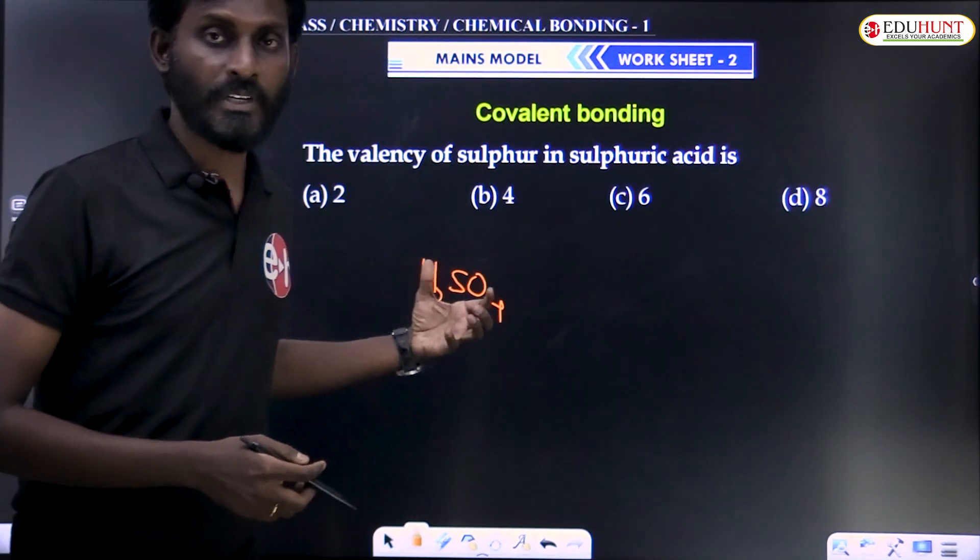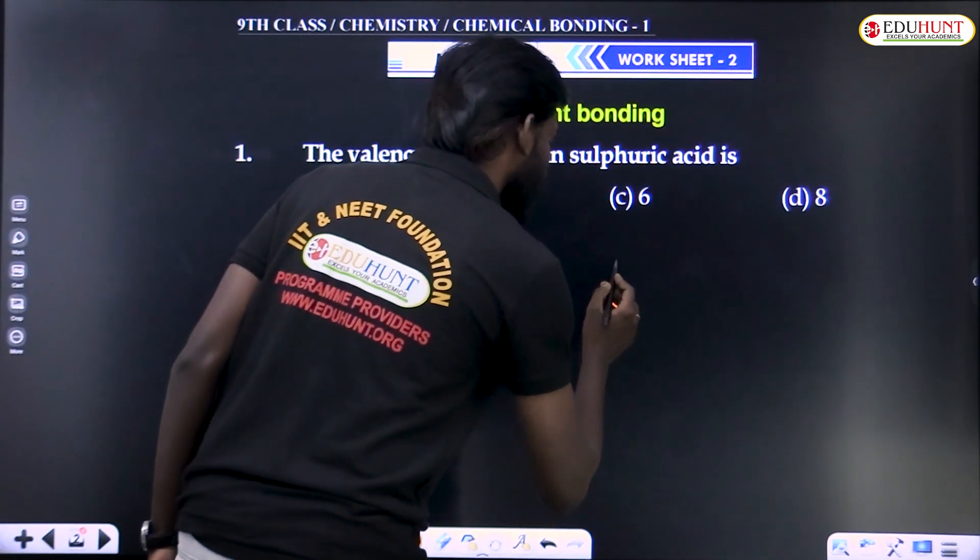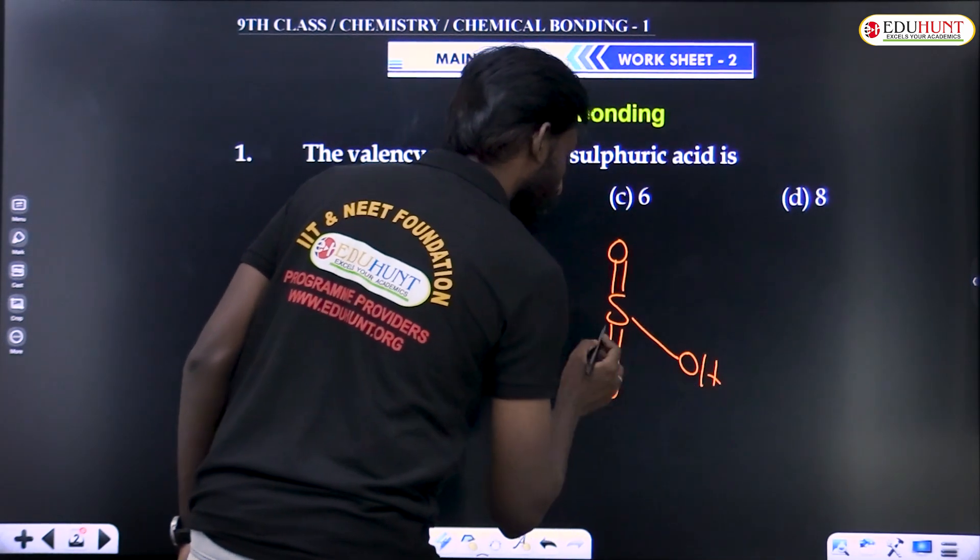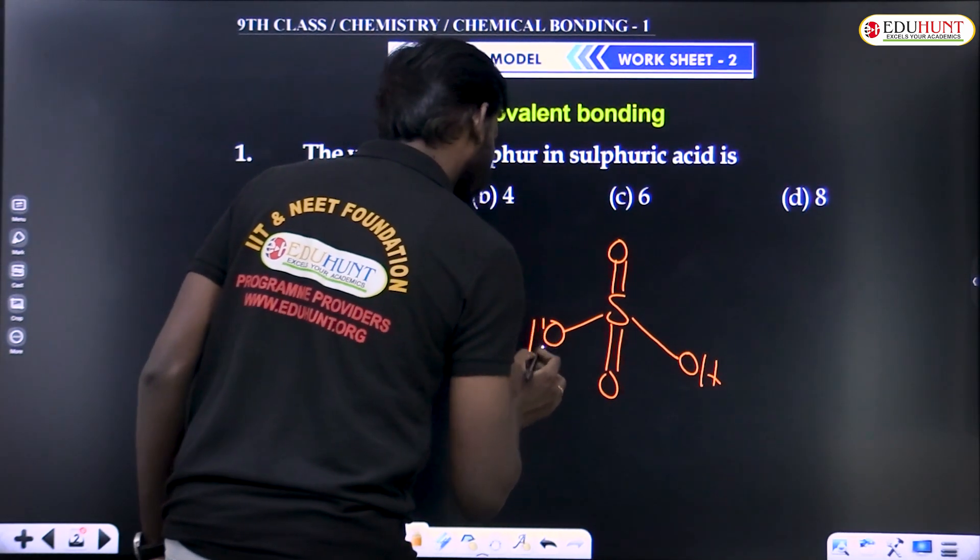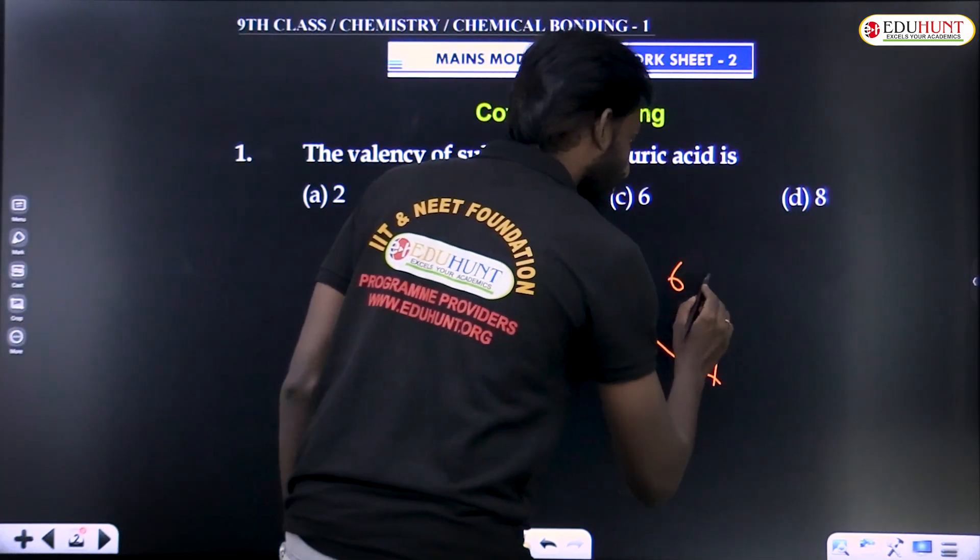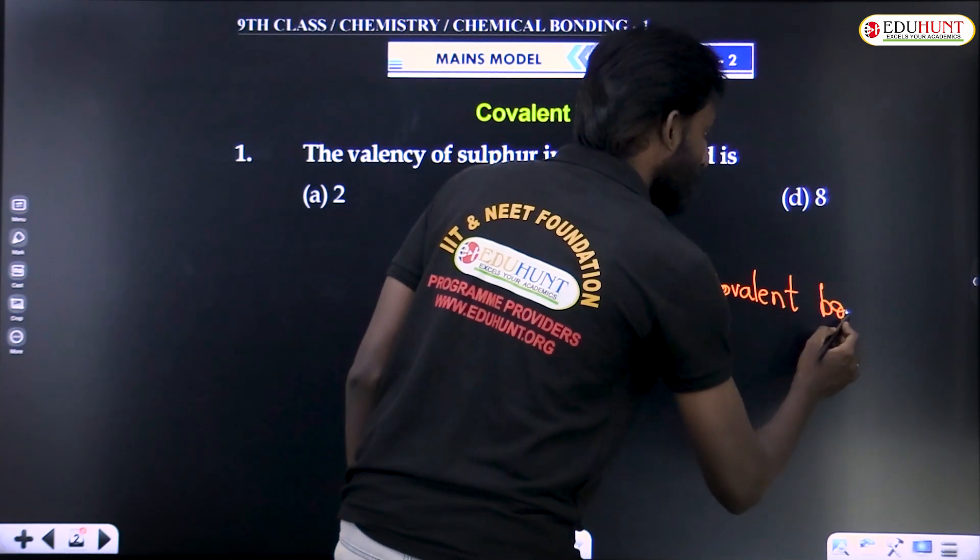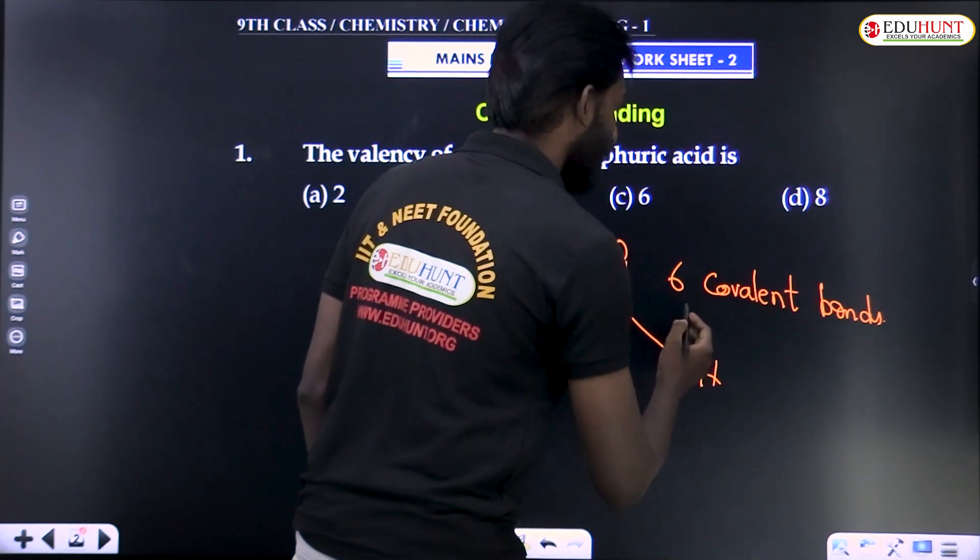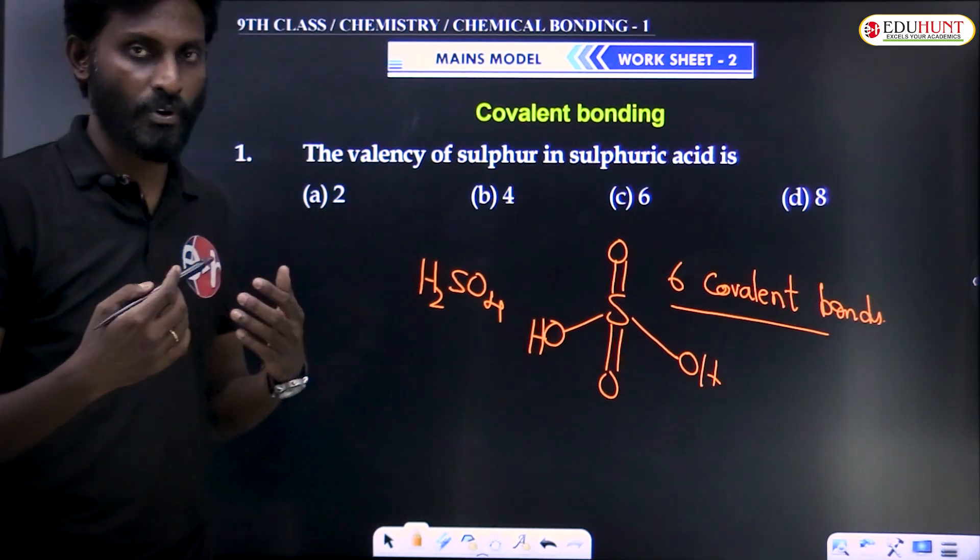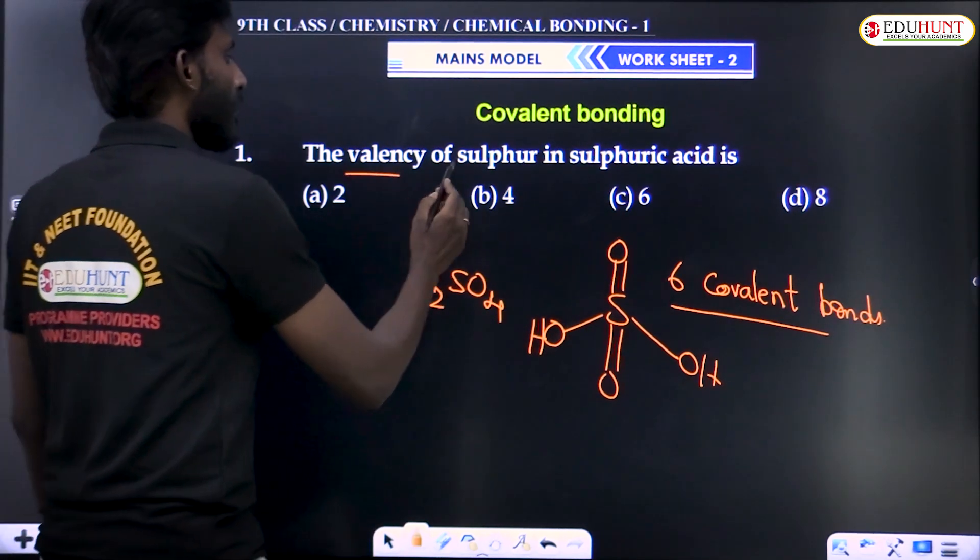The structure proposed - the central atom is sulfur. Here you can see six covalent bonds. Six covalent bonds. So number of covalent bonds is equal to covalency. Number of covalent bonds is equal to covalency in the case of covalent compounds. Covalency is nothing but valency. Valency of sulfur is six.